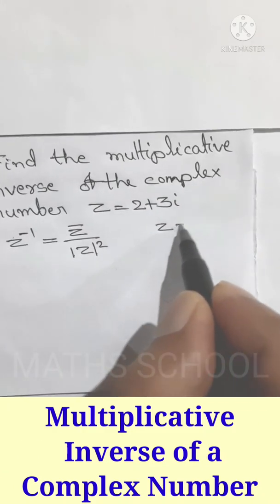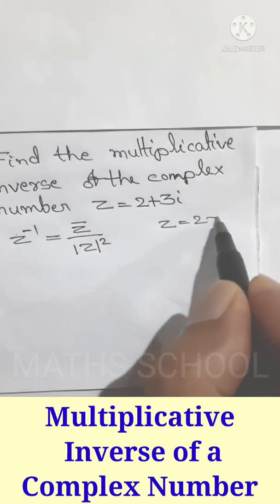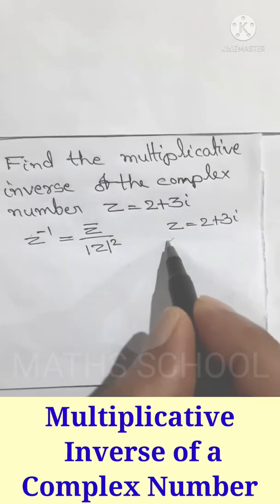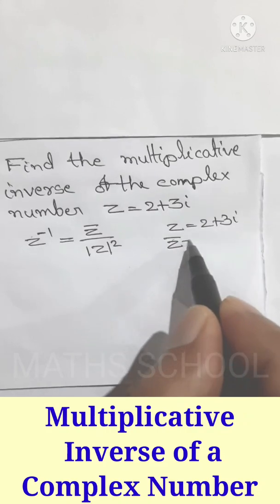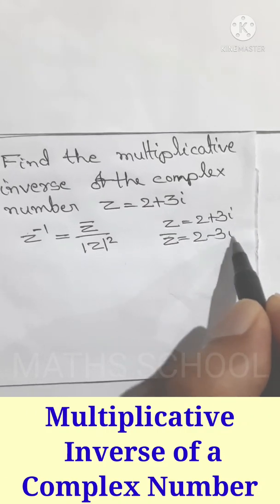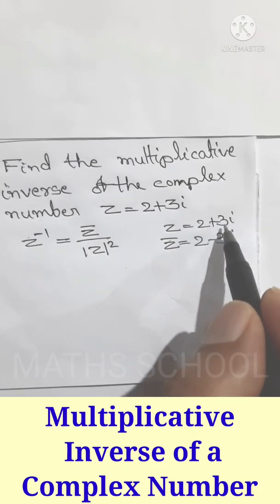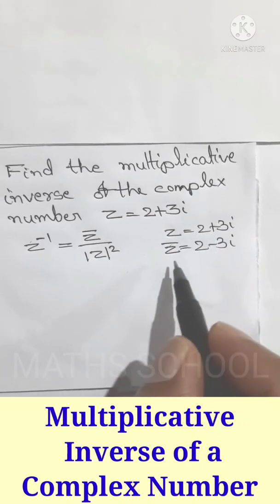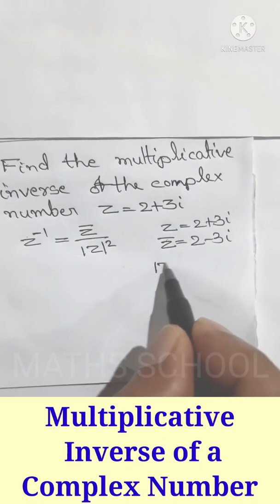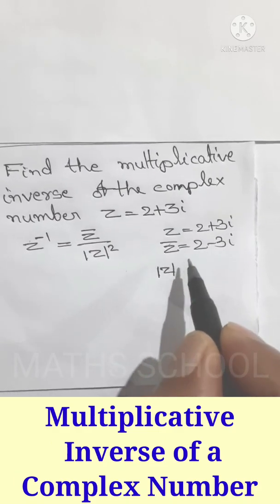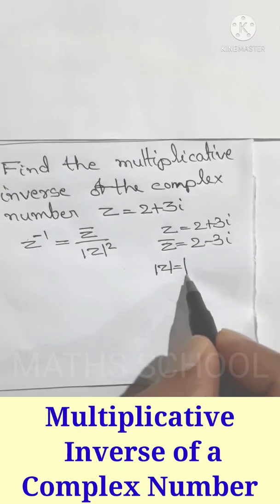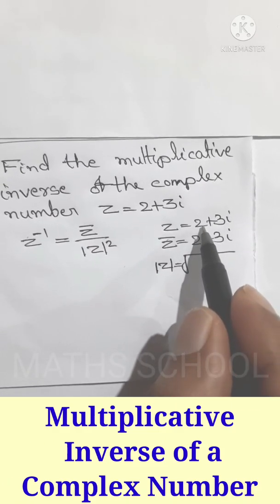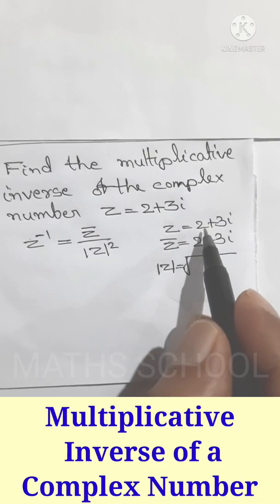Here z equals 2 plus 3i, and z conjugate equals 2 minus 3i — just change the sign of the imaginary part. And modulus of z equals the square root of the real part squared plus the imaginary part squared.